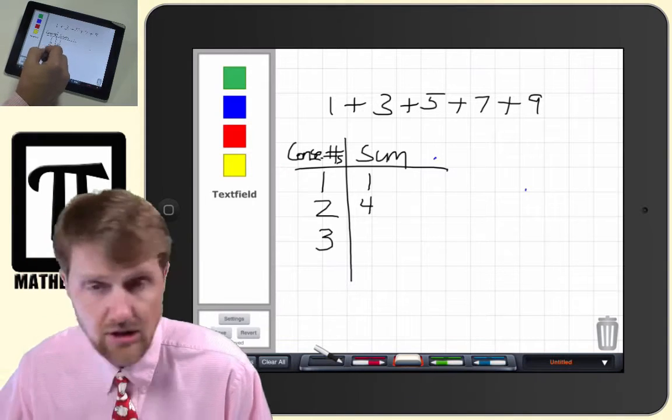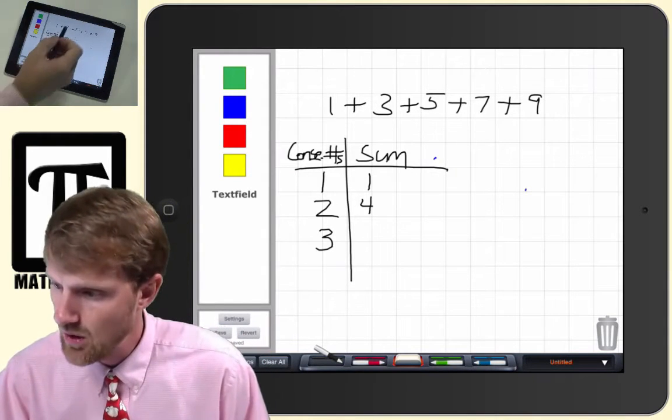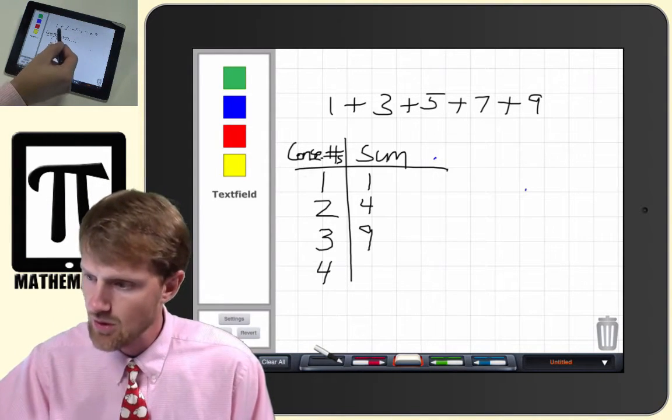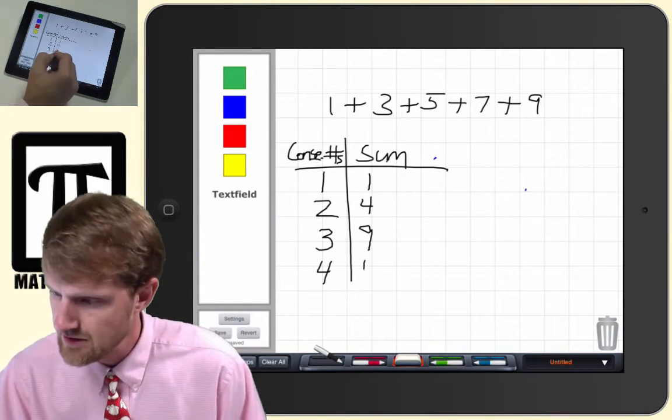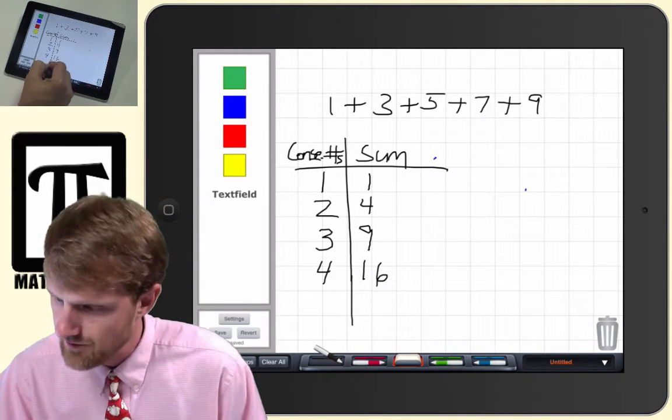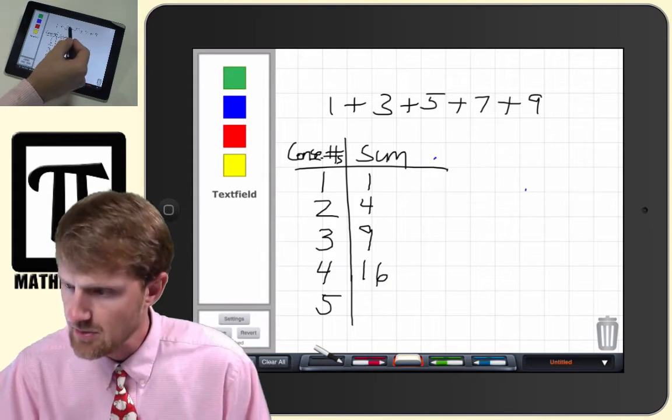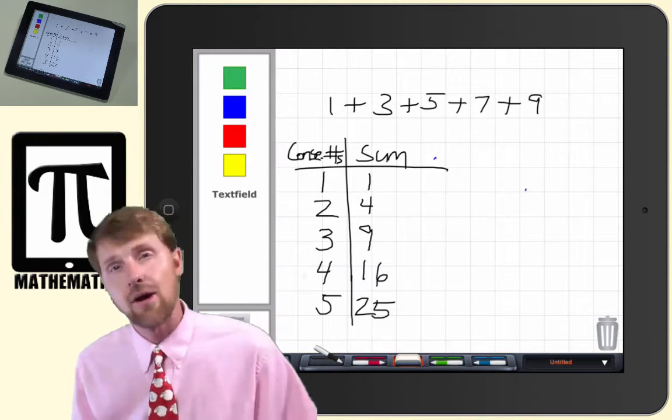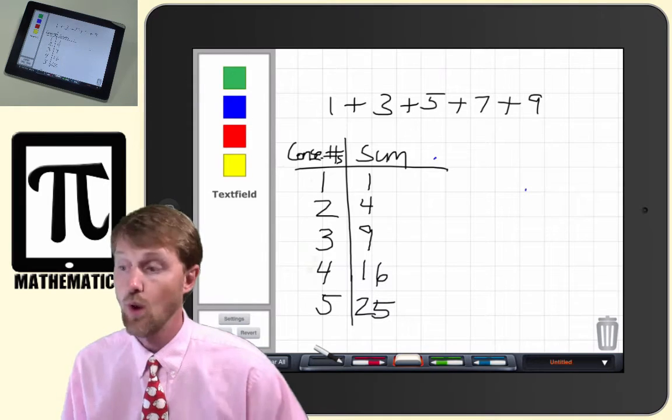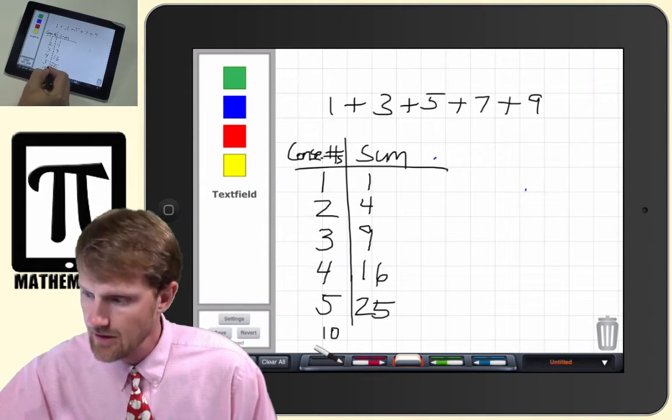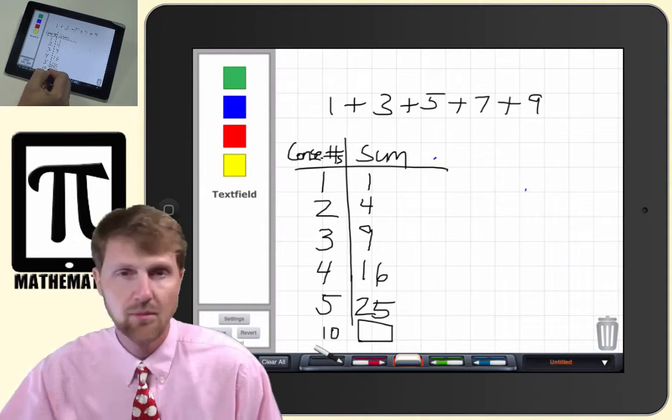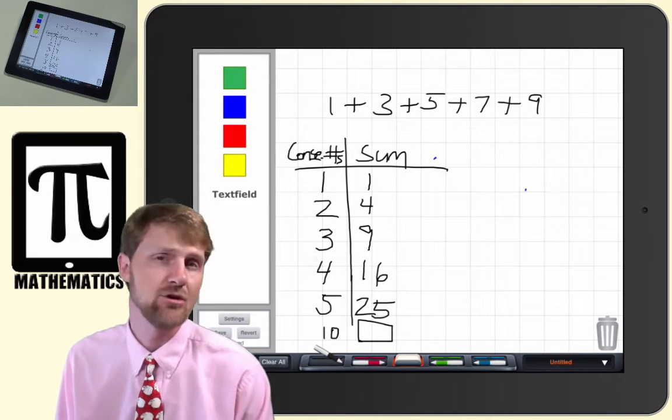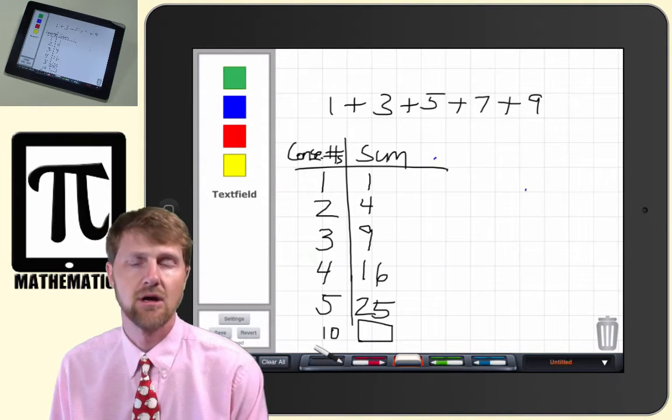When you have three consecutive odd numbers, it's going to be 1 plus 3 plus 5, which is 9. When you have four consecutive odd numbers, it's 1 plus 3 plus 5 plus 7, that's 16. Five consecutive numbers, 1 plus 3 plus 5 plus 7 plus 9, it's going to be 25. And now you ask students to find a rule.